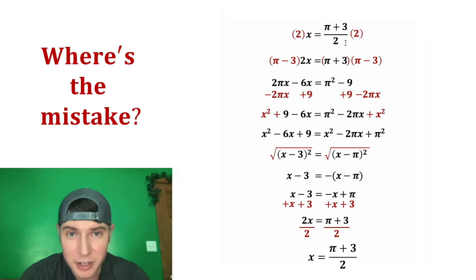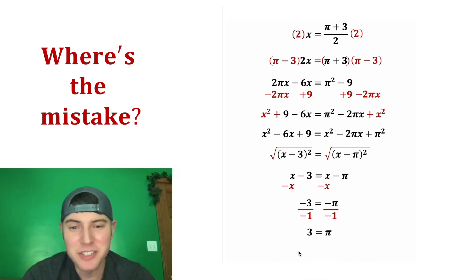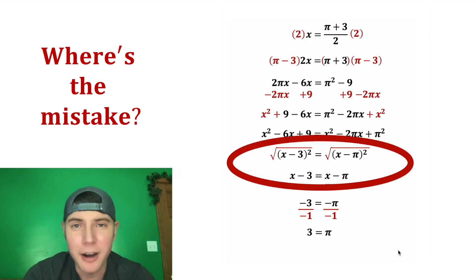But we already knew that. So in reality we didn't accomplish anything with all this work. We just applied operations and then their inverses, and it brought us back to where we started. But we did successfully find the mistake in this proof of 3 equals pi. And that was in this step right here. How exciting.